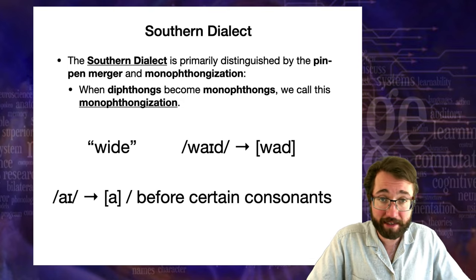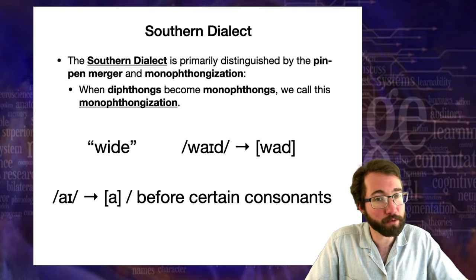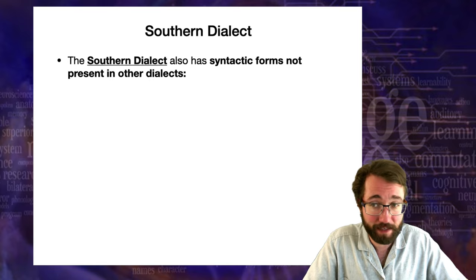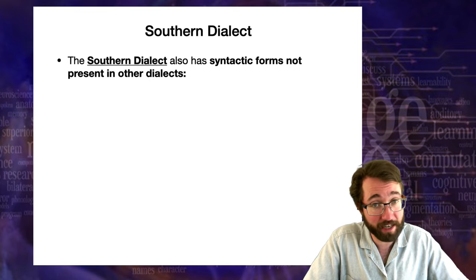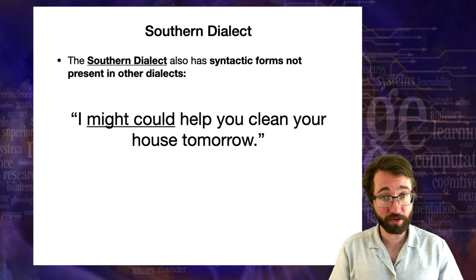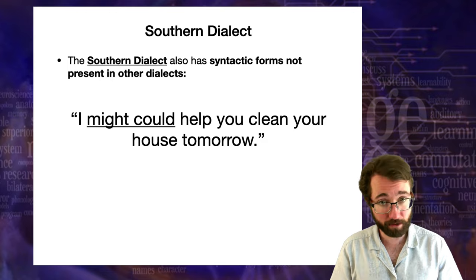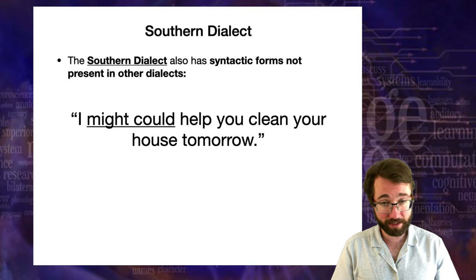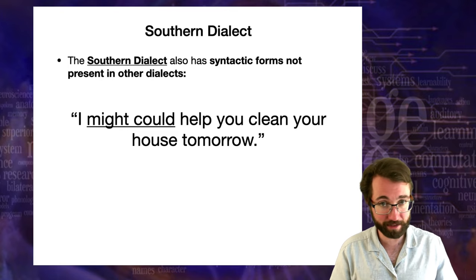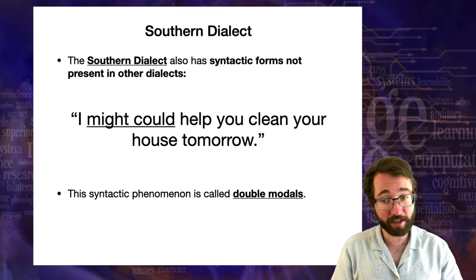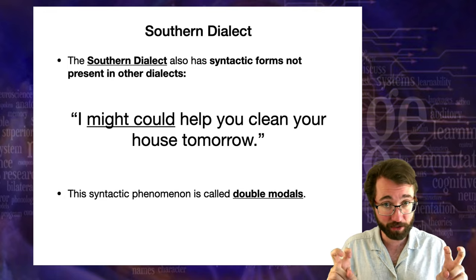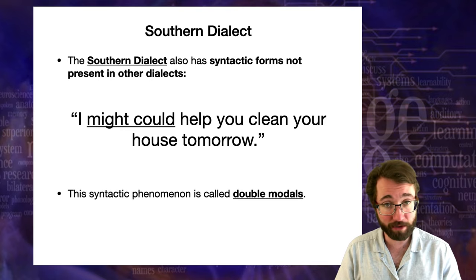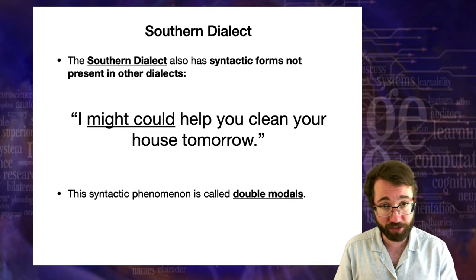The consonants affected depend on the dialect area within the South. The southern dialect also has certain syntactic forms not present in other dialects. In southern American English, you can say something like 'I might could help you clean your house tomorrow.' In California English this would be starred as ungrammatical, but it's perfectly grammatical in southern US English — it means 'I might be able to help you.' This syntactic phenomenon is called double modals. Verbs like 'might' and 'could' are modal verbs, and in standard American English you can only have one main modal per sentence, but in southern US English you can have two.